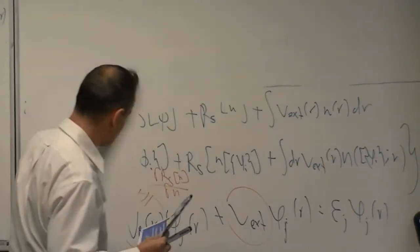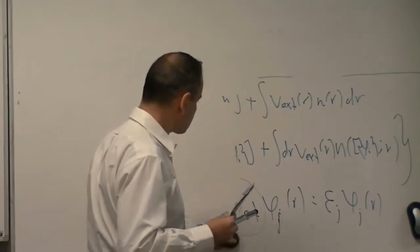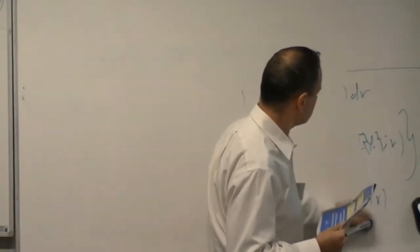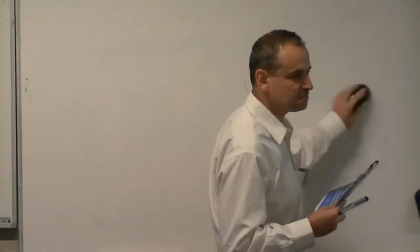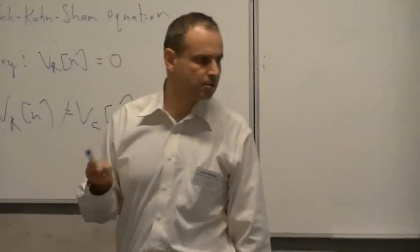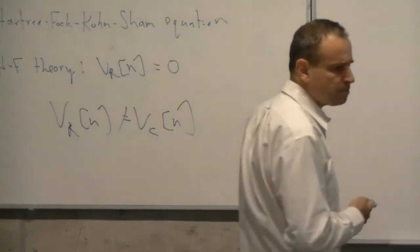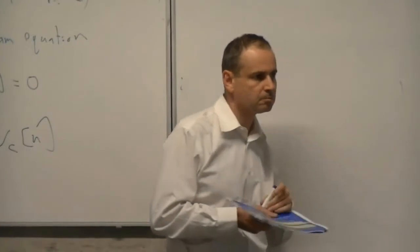It's worth noting, as mentioned in an earlier talk, that the exact v_R here is not exactly the same as the exact correlation potential of Kohn-Sham theory. They're close but not identical, because the non-local exchange operator is not exactly the same as the local exchange operator in Kohn-Sham theory. Under standard circumstances they shouldn't be too far apart, but they're not the same.